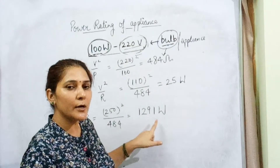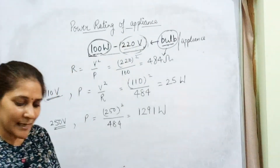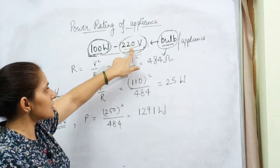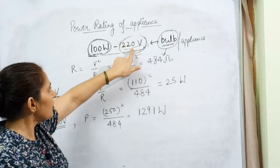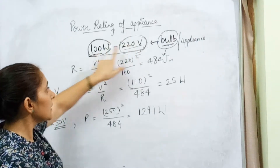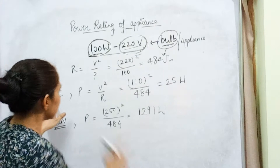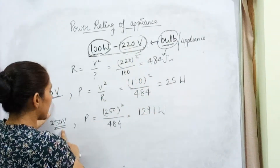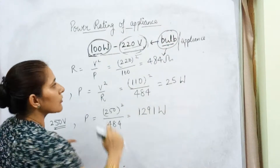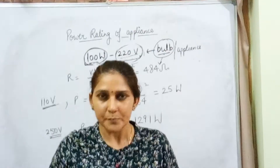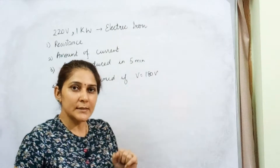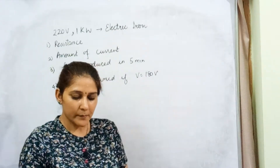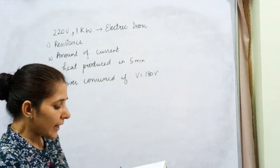The power consumed by the bulb increases — earlier at 220 volt it consumed 100 watt, now at 250 volt it consumes 129.1 watt. With this example, it should be clear: if potential difference is 220 volt, power consumption is 100 watt; if potential difference decreases, power consumption decreases; if potential difference increases, power consumption increases.